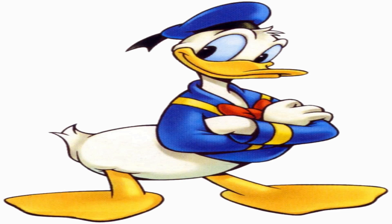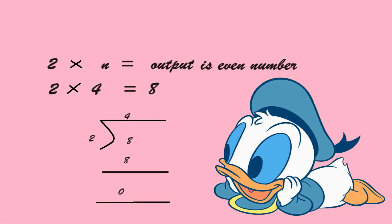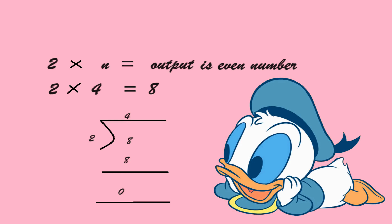Let us see this with an example. 2 into n is equal to an even number. For example, 2 into 4 is equal to 8, so 8 is an even number. And 8 divided by 2 is 4, so the divisible of 2 is also an even number. In either case, 8 is an even number.